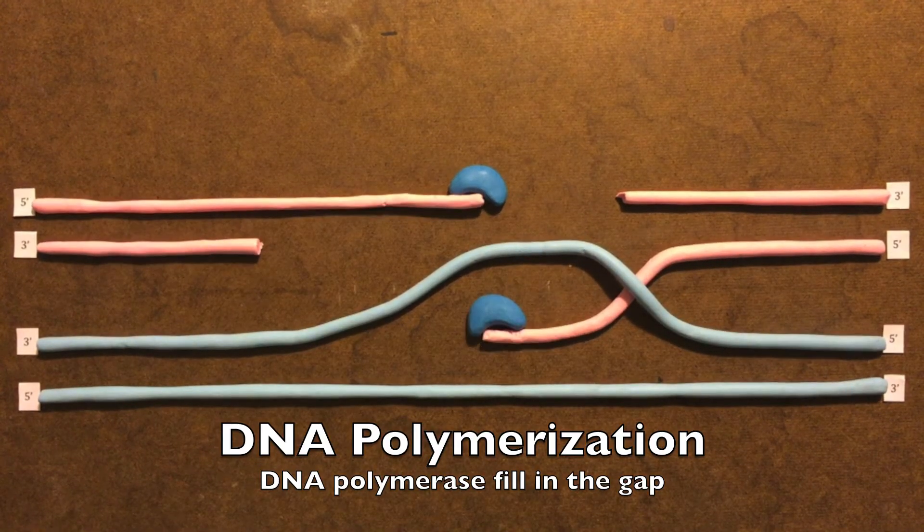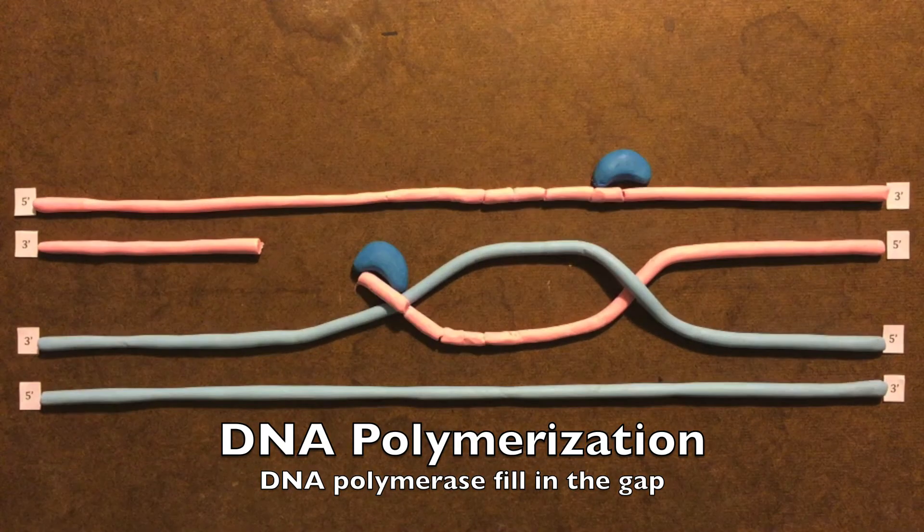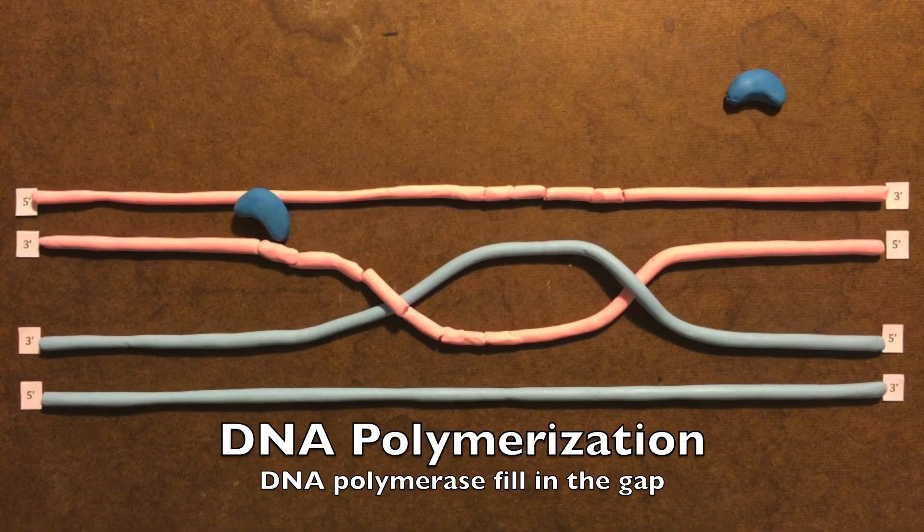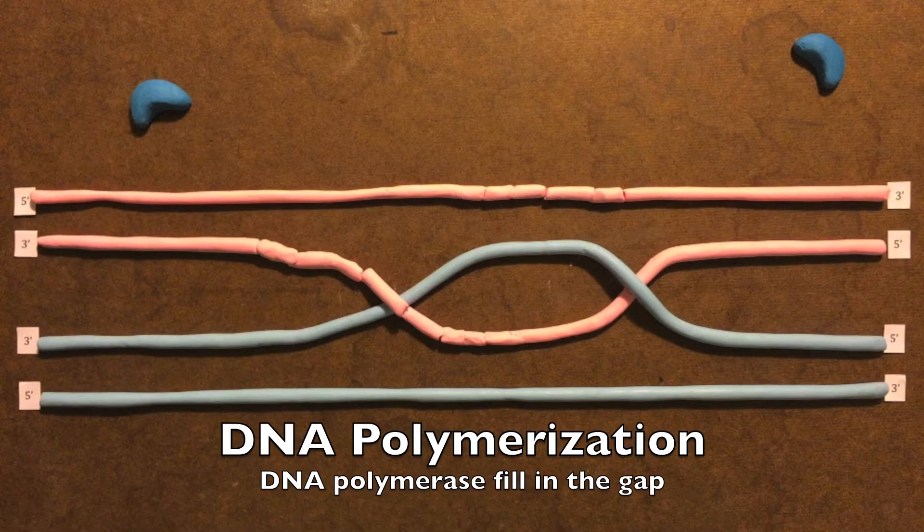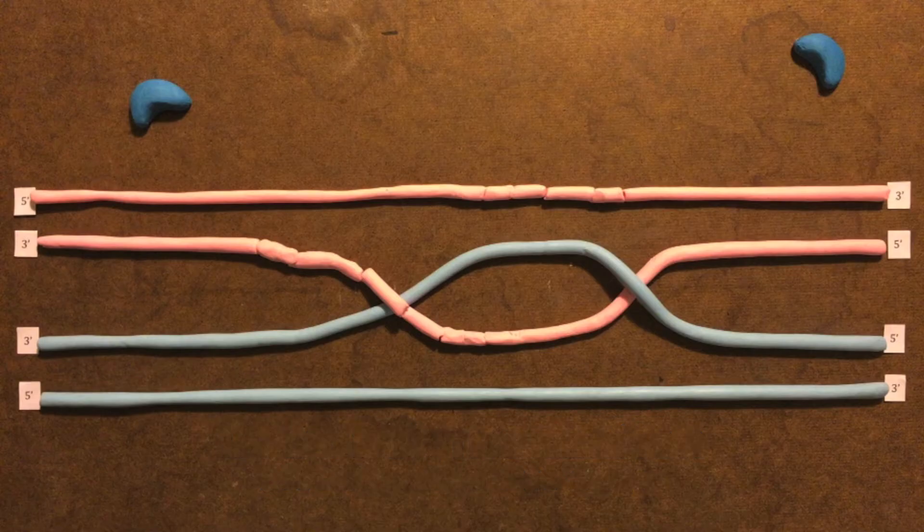After strand invasion, DNA polymerase fills in the gap by elongating the 3' end of the invading strand. It synthesizes the complementary base pairs to the template strand. There does not need to be a primer to initiate polymerase activity. The invading 3' strand is sufficient to prime DNA for synthesis.